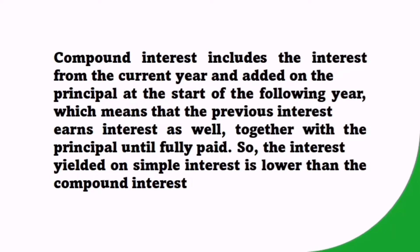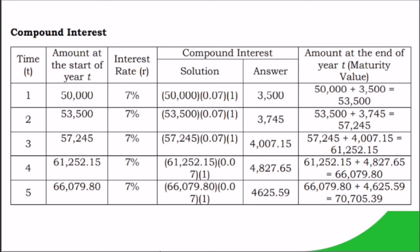Compound interest includes the interest from the current year added on the principal at the start of the following year, which means the previous interest earns interest as well, together with the principal, until fully paid. The interest yielded on simple interest is lower than compound interest. The amount at the end of five years in simple interest is 67,500 Cuban pesos, while in compound interest it is 70,705.39 Cuban pesos. Therefore, if you are a borrower, make sure the interest on your loan is not too high — if you find a lender that offers simple interest, better grab it over a lender who offers compound interest.